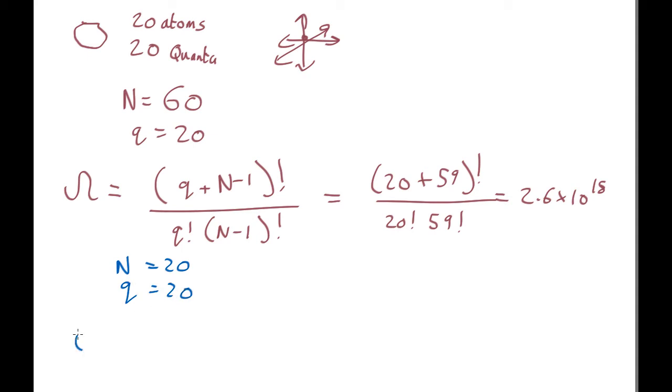So, omega is 20 plus 19 factorial over 20 factorial 19 factorial, which comes out as 6.9 by 10 to the 10 possible states.